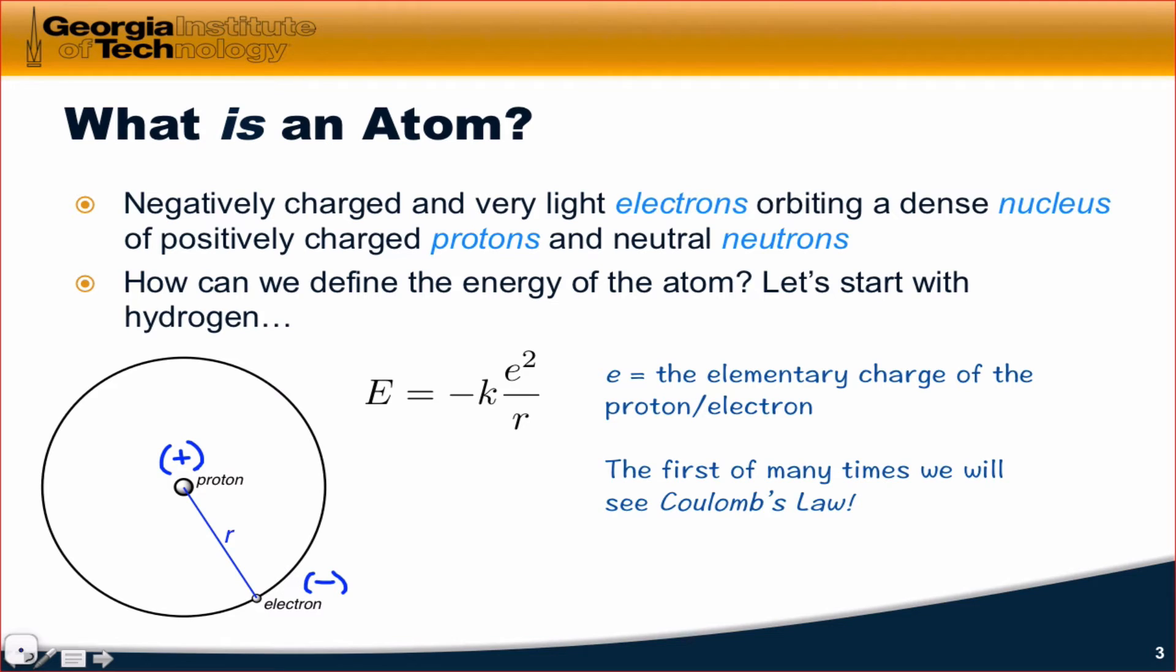So the question arises: how can we define the energy of the atom? And in particular, how does the energy vary with electron position? Well, if we think of a hydrogen atom, which has just one proton and one electron,